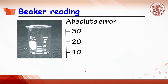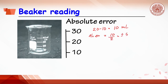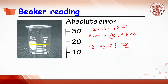In the case of a beaker, say a 50 ml beaker, the smallest scale is 20 minus 10, equal to 10 ml. The absolute error is 10 divided by 2, which is plus or minus 5 ml. For example, if the water level is at the marked line, the volume may be reported as 25, 26, 27, or even 28 — all are correct since those last digits are uncertain numbers.